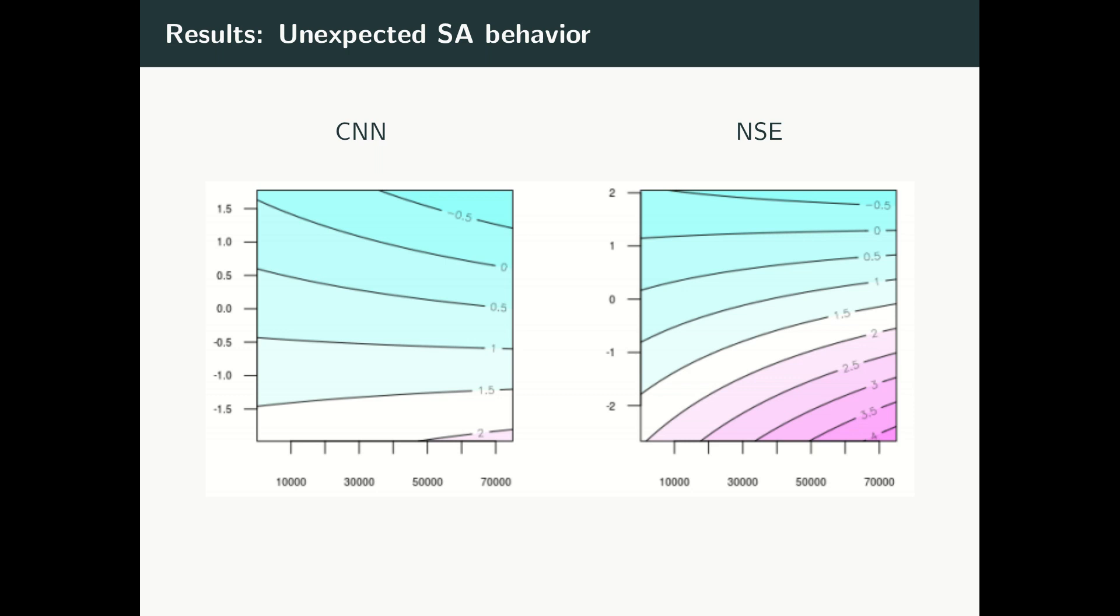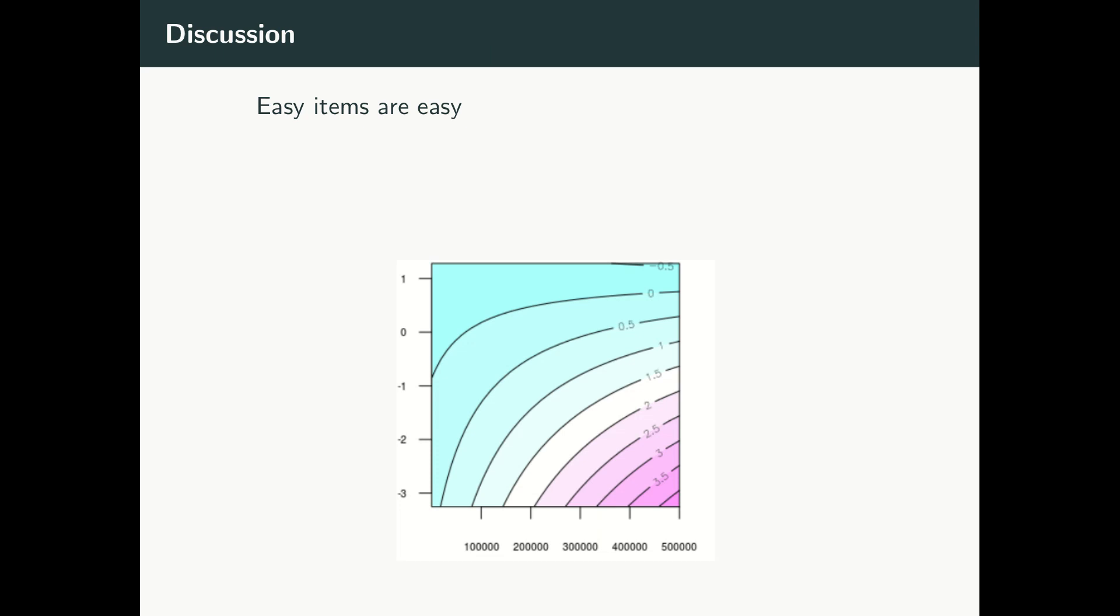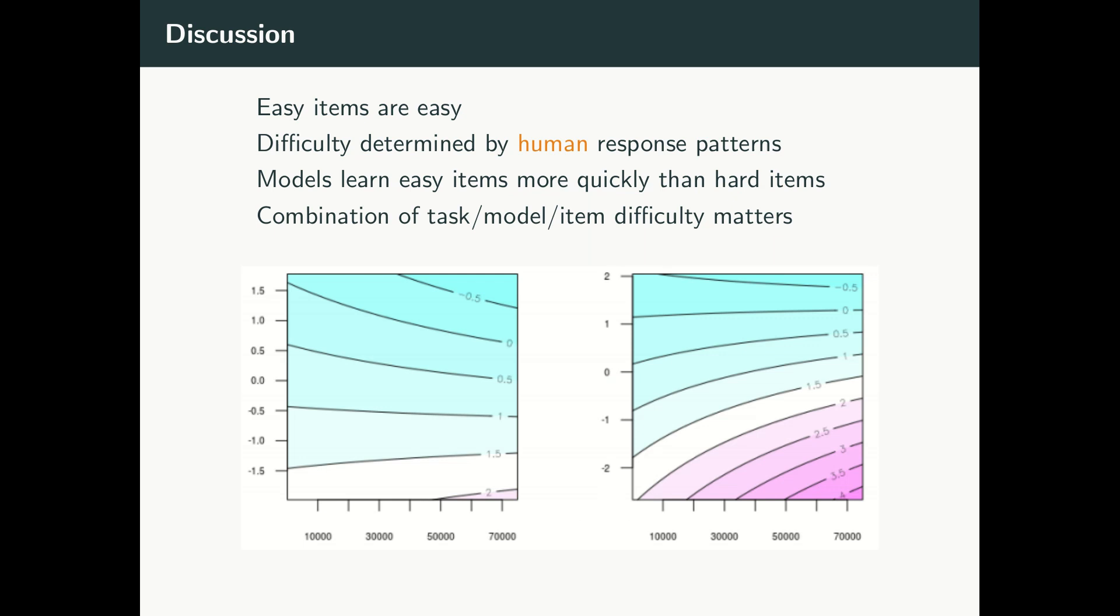So to wrap up, in our IRT case study, we've learned a few things. First, that easy items are easy for these deep learning models. Again, at first that doesn't sound surprising, but remember that the difficulty was determined by human data. Second, model performance on the easy items improves more quickly than performance on the hard items as more data is added. This result may be useful when determining whether to obtain more data to train a model or looking into different architectures. You'll need more data to improve performance on these harder items if that's what you're looking for. Finally, the combination of task, model, and item all matter when evaluating performance. Certain models may behave differently for the most difficult items based on patterns learned during training.